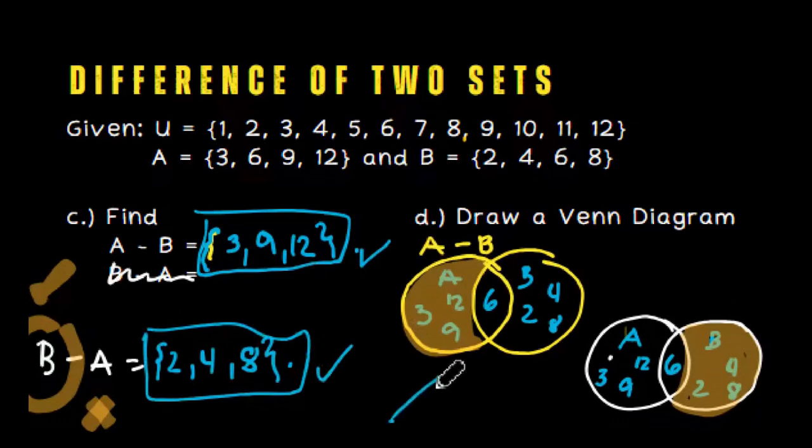And that should be the final answer for this part. Take note of these two illustrations of the Venn diagram: this is B minus A, and this is A minus B.